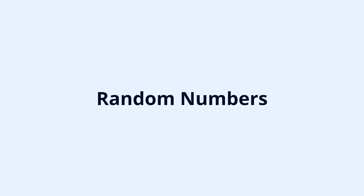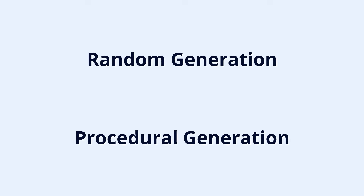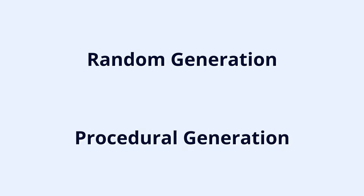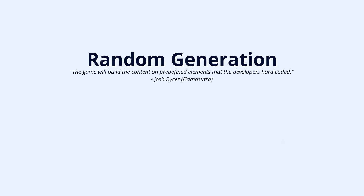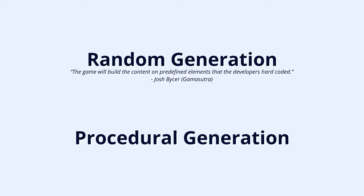Let's get some terminology out of the way, because there is a difference between random generation and procedural generation. You'll find that random generation and procedural generation are often used interchangeably, but for our purposes we'll go with the definitions defined by Gamasutra. We have randomly generated games where the content is built from predefined elements, and we have procedurally generated content where the game builds entirely original content. Now that we know what we're talking about, how can we actually use our random numbers to generate elements in our games?